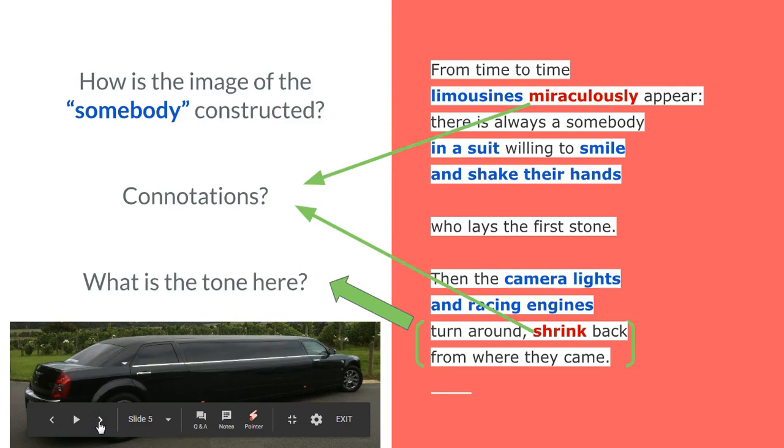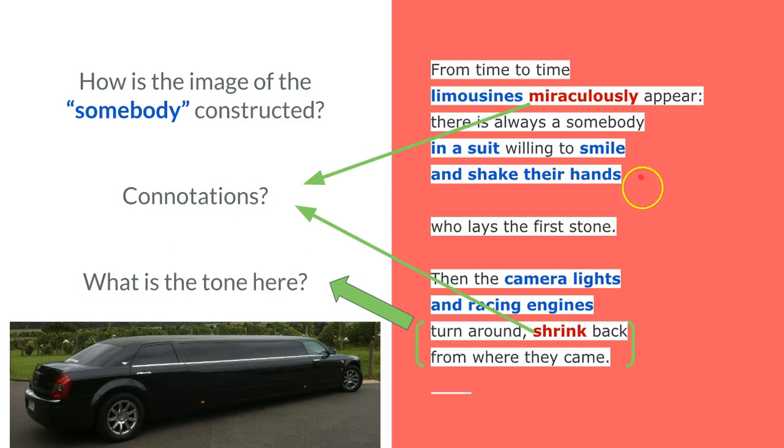However, the next few stanzas we do get a hint that somebody in authority is hanging about. Does that give the people waiting for their houses and the men waiting for instructions any joy? Well, let's have a look. From time to time, limousines miraculously appear as if from nowhere, and there's always a somebody—again, not a specific person, a somebody—in a suit willing to smile and shake their hands.